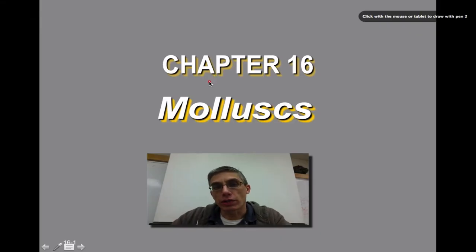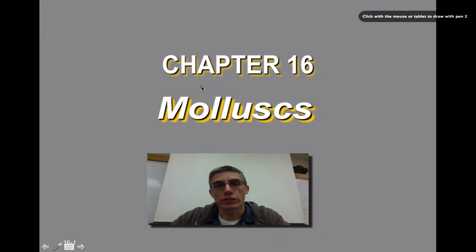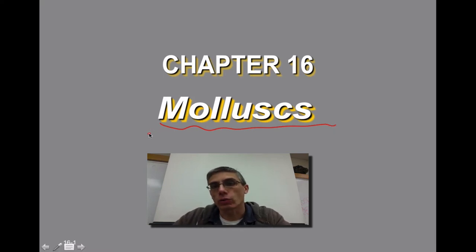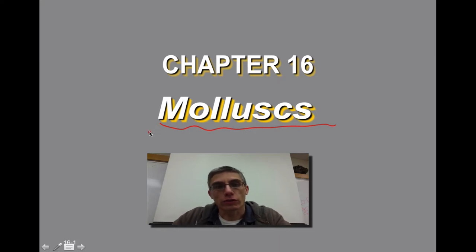Welcome back. This is going to be our very first screencast for Chapter 16. In Chapter 16, we are going to be looking at a group of animals called mollusks. Mollusks are considered one of the most diverse groups of animals out there, second only to the group called arthropods. And the arthropods include the insects, the arachnids, and the crustaceans.